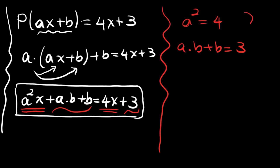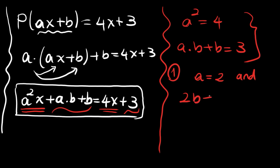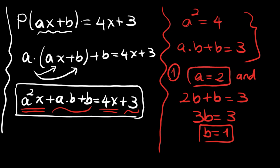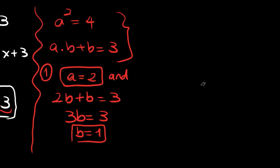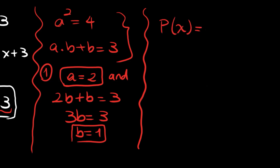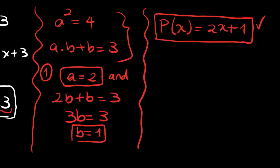Let's solve this system. A² = 4, so A can be 2. Then 2B + B = 3, so 3B = 3, giving B = 1. The first solution is A = 2 and B = 1. Therefore P(X) = 2X + 1. Our first result is P(X) = 2X + 1.